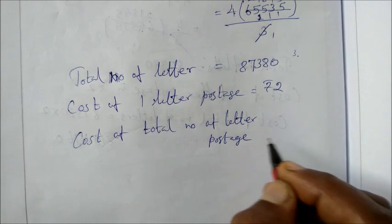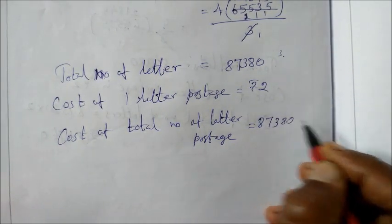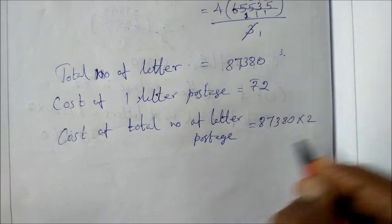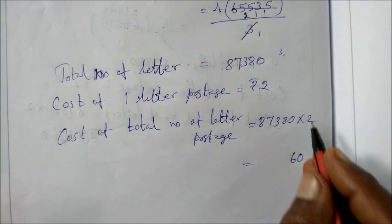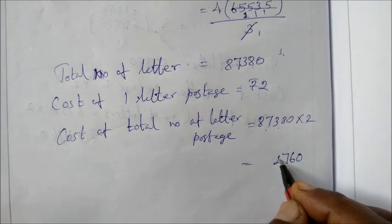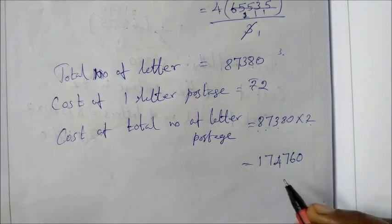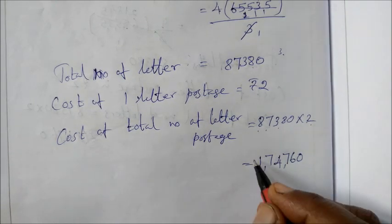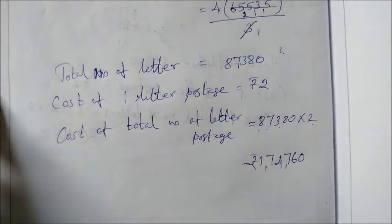For all letters, postage is 87380 total number of letters into 2. Multiplying: 0 times 2 is 0. 8 times 2 is 16, balance 1. 3 times 2 plus 1 is 7. 7 times 2 is 14, balance 1. 8 times 2 plus 1 is 17. So the answer is 174760 rupees.